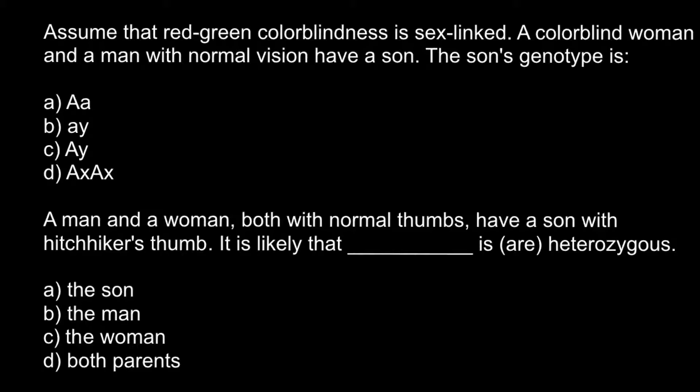Because the female is colorblind, that means both of her X chromosomes have the defective allele. This is an X-linked recessive genetic disorder, and for a female to be colorblind she must have the defective allele on both chromosomes. We know the male has normal vision, so his X chromosome is normal and he has a Y chromosome that defines maleness.